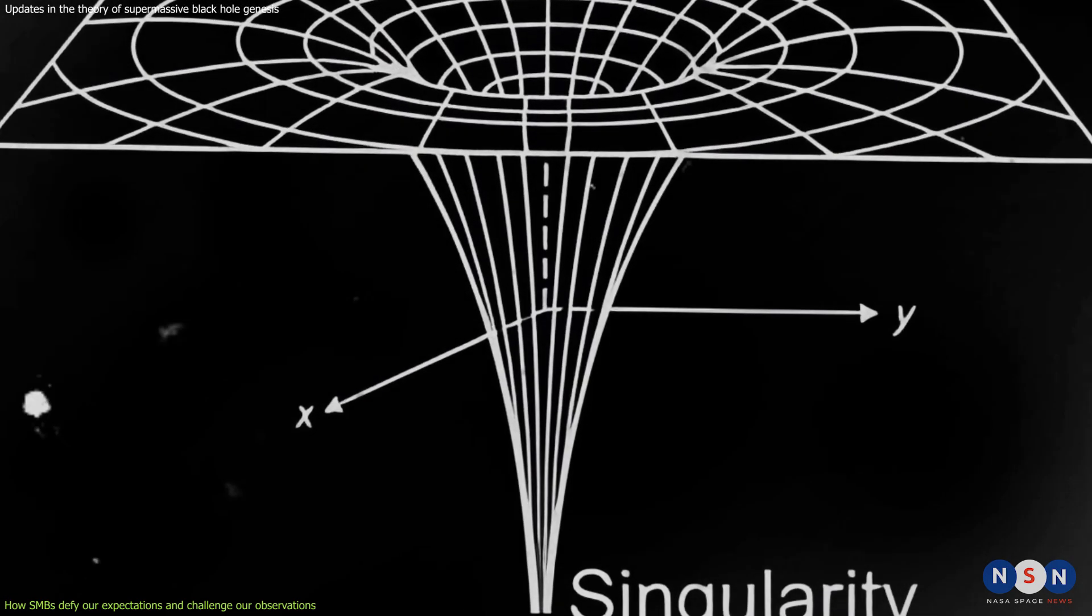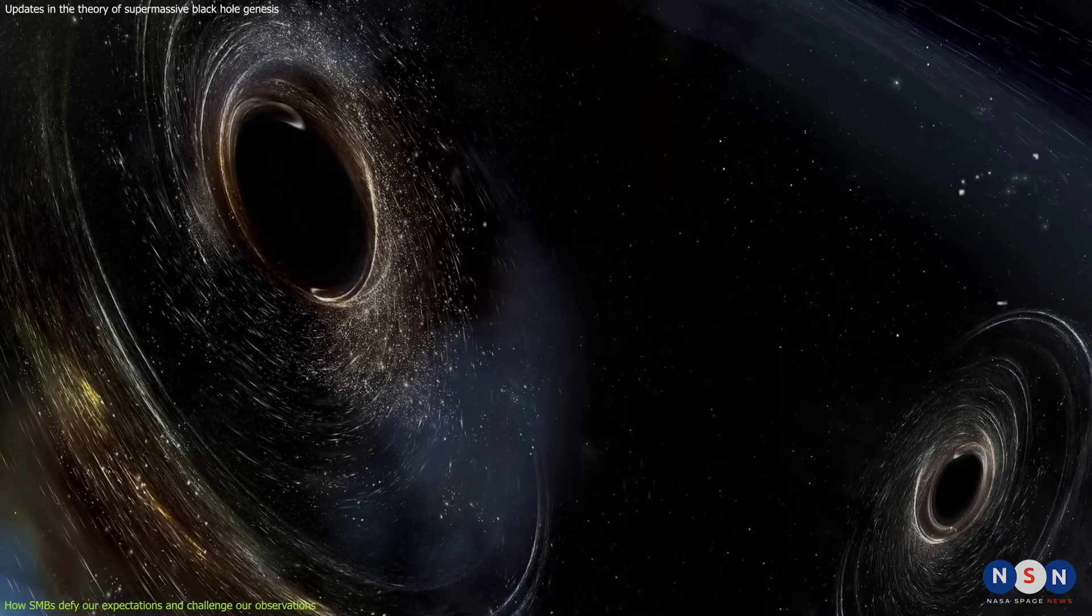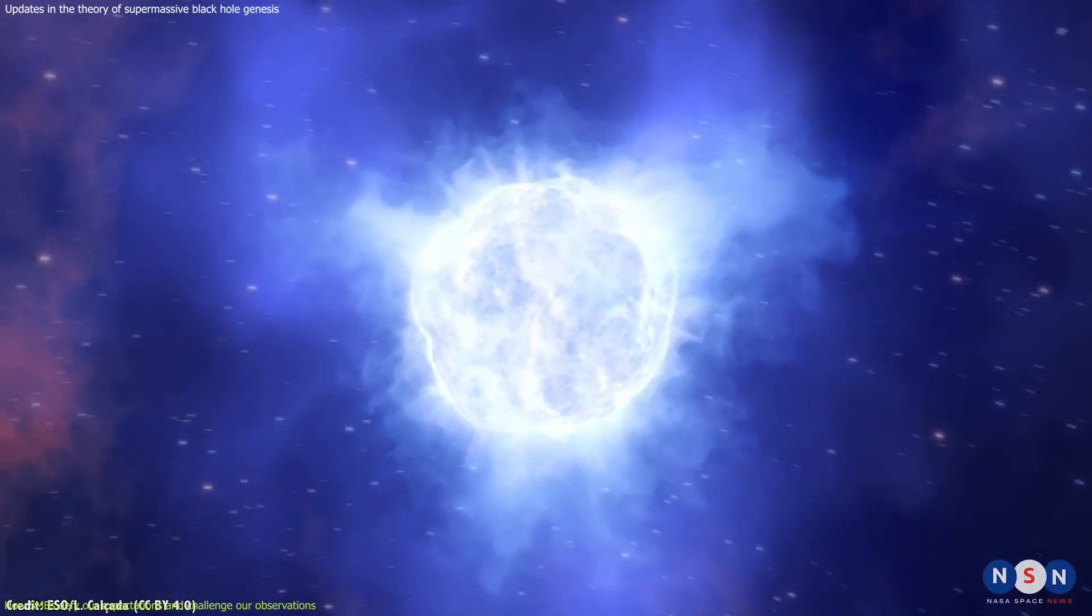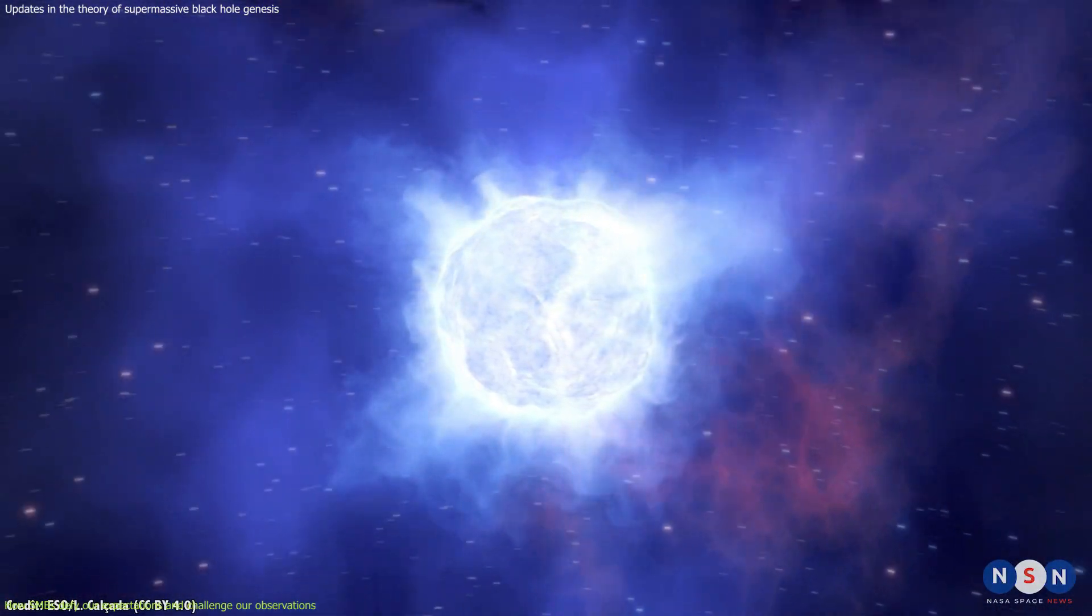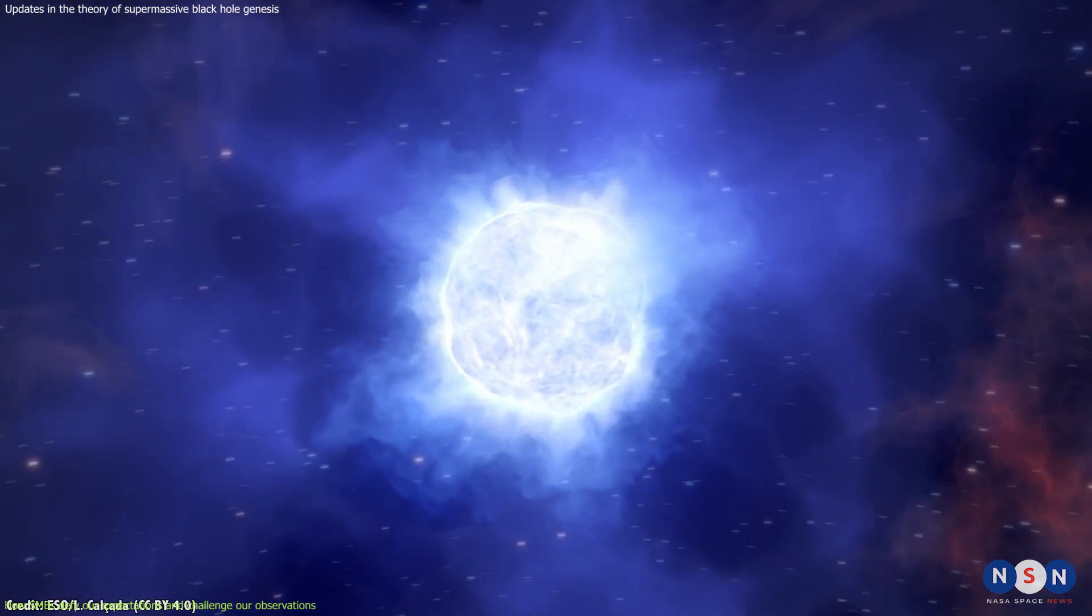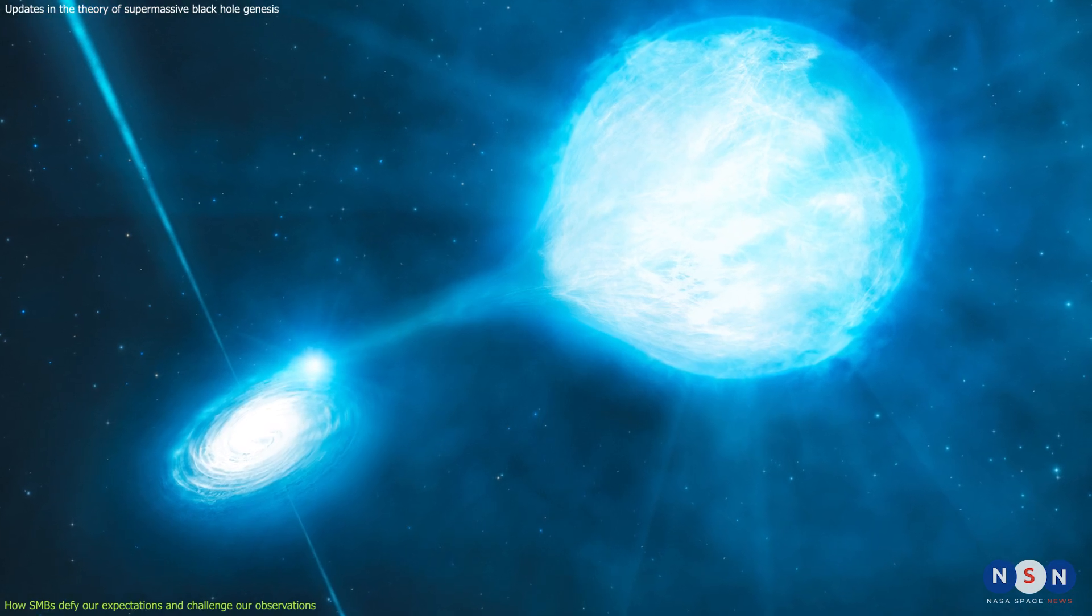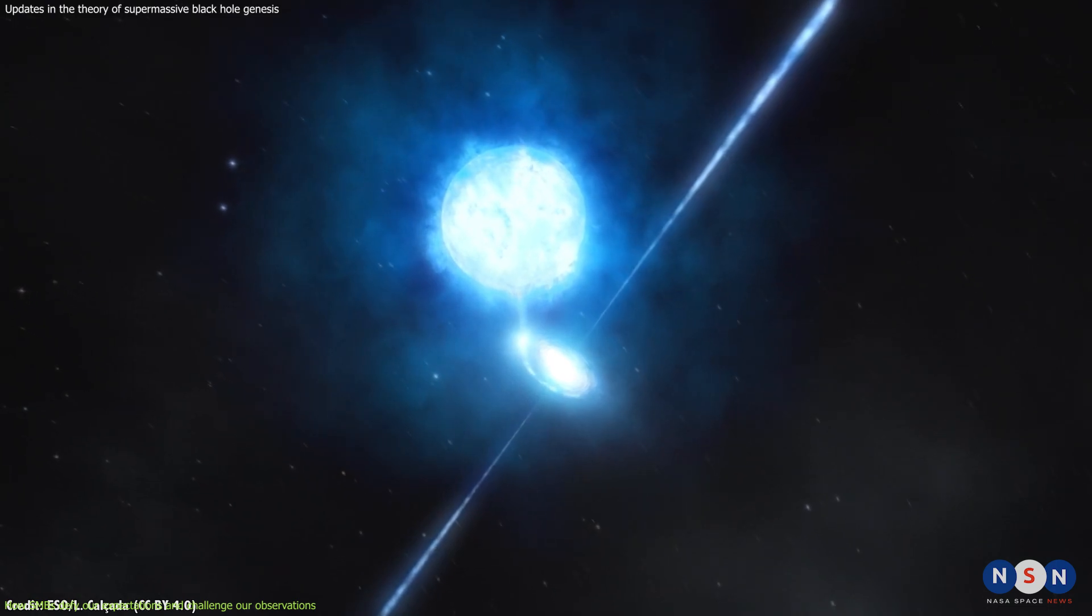But not all black holes are created equal. There are different types of black holes depending on their size and origin. The most common ones are stellar black holes, which form when massive stars die and collapse under their own gravity. These black holes have masses ranging from a few to tens of times that of our sun, and they can grow by absorbing matter and energy from their surroundings.